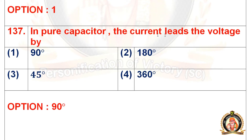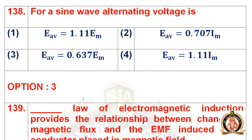Question 137: In a pure capacitor, the current leads the voltage by. Options are 90 degrees, 180 degrees, 45 degrees, and 360 degrees. The right option is the first option, that is 90 degrees. In a pure capacitor, the current leads the voltage by 90 degrees.